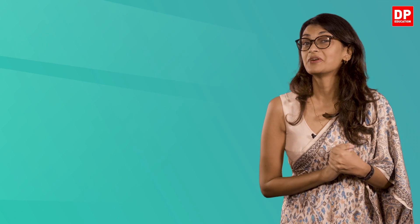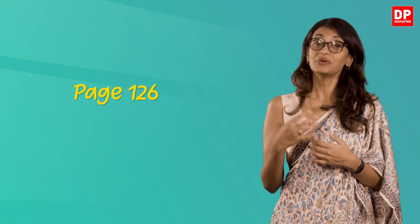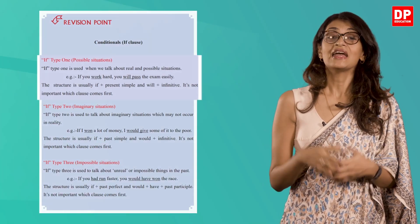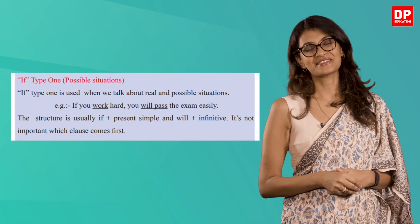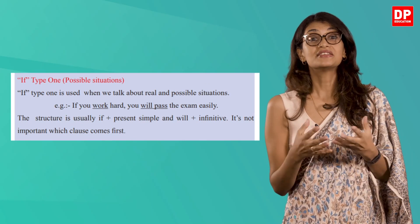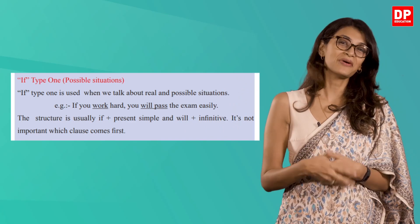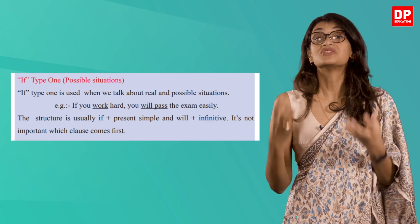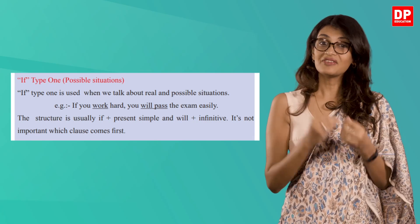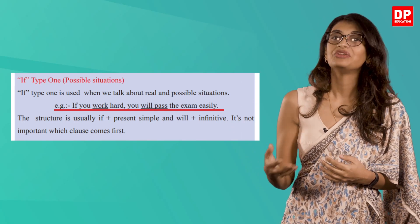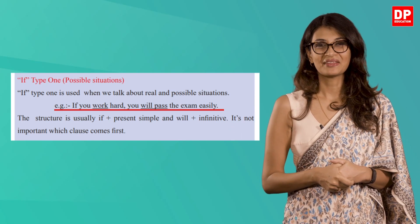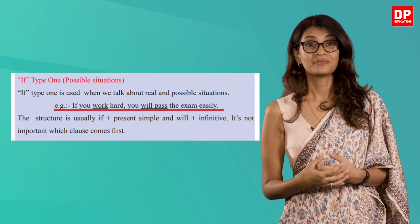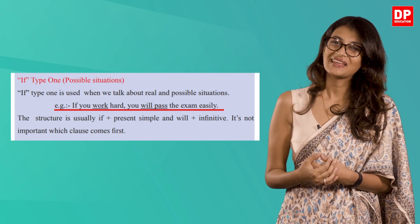Let's look at your pupil's book, page 126, Unit 10, revision point. The first point is if type 1 — possible situations. If type 1 is used when we talk about real and possible situations. This is very similar to what we just discussed about general truths. The example given is: 'If you work hard, you will pass the exam easily.' Look at how it is constructed: if plus present simple, and will plus infinitive.